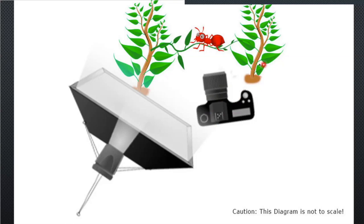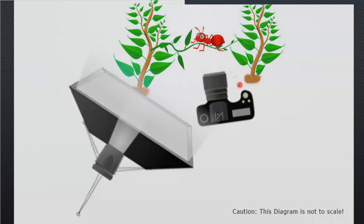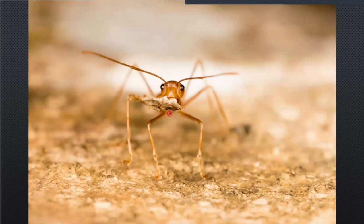When I approach an insect, I don't use autofocus. I put the camera on manual mode, fix the focus to a point, and then move the camera forward and backward so the subject comes into focus. When the eye of the subject comes into focus, I click. This is how a shallow depth of field image looks — only the eye of the ant is in focus while the hind legs and forelegs are out of focus. Just the eye and a little of the antenna are sharp.